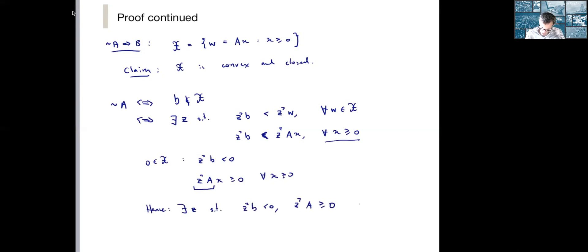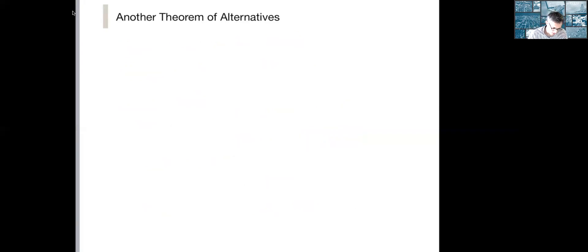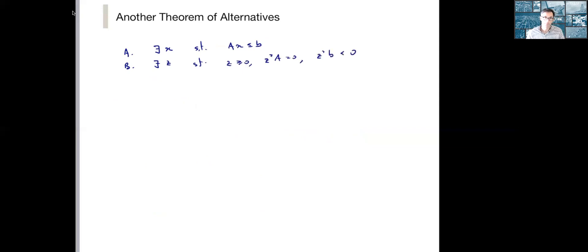Let's do another one just for practice — it's going to be very similar. Given A and b, exactly one of the following holds. Statement A: there exists an x such that Ax is less than b. Statement B: there exists z such that z is non-negative, z transpose A is equal to zero, and z transpose b is less than zero.